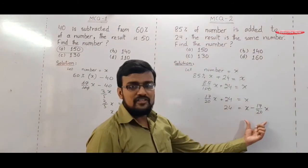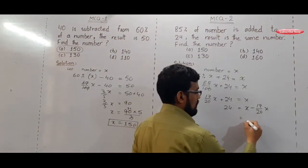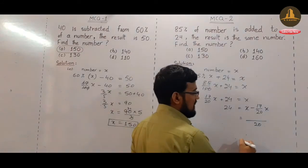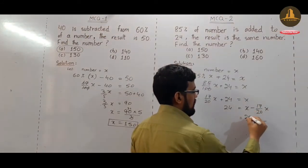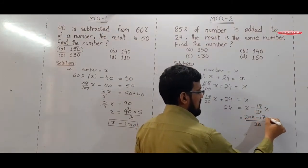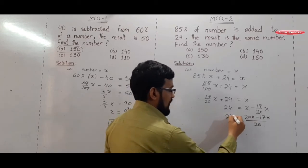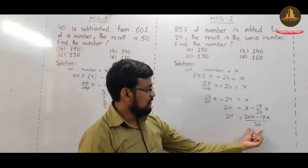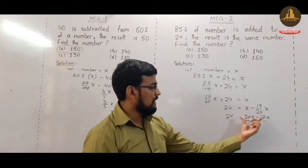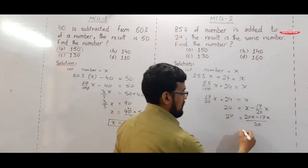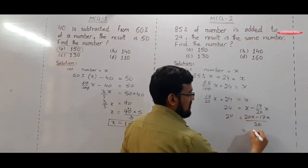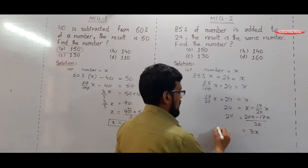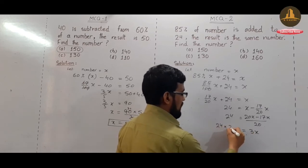Take LCM 20. LCM here is 20X minus 17X and 24. So 20 divided becomes multiply. And here is subtracted: 20 minus 17 means 3X and 24 multiply 20.